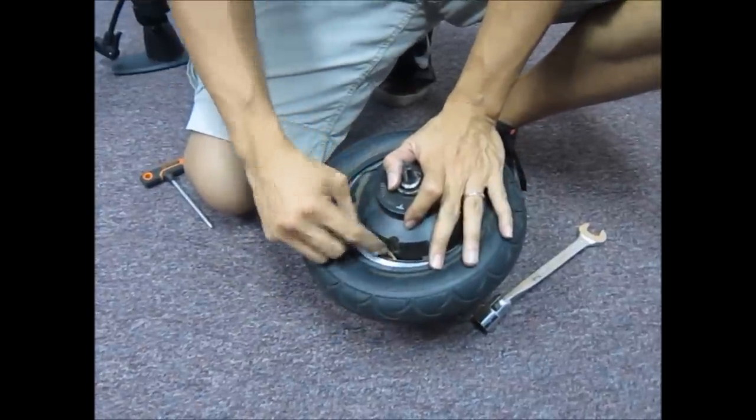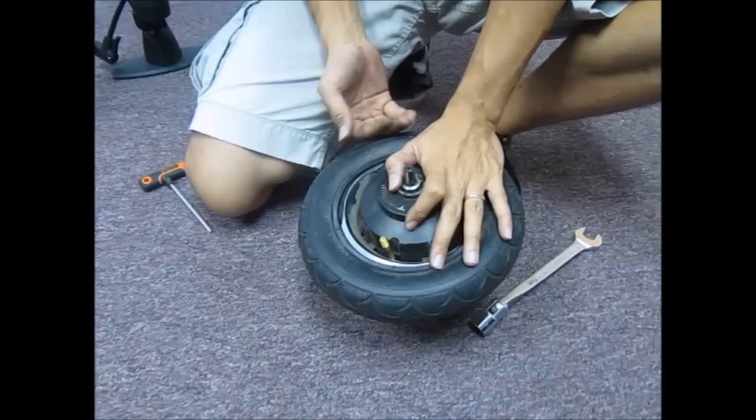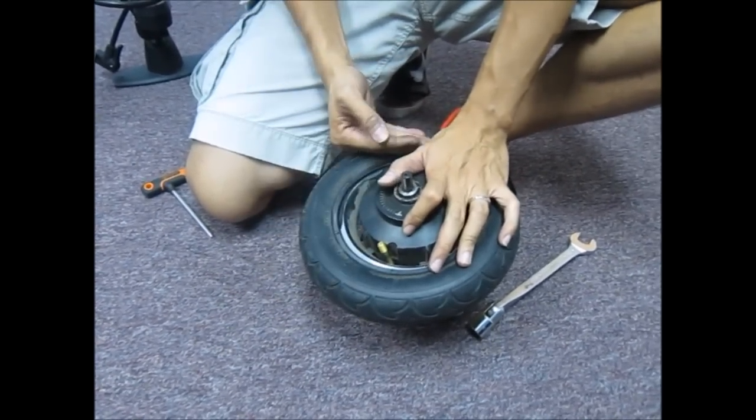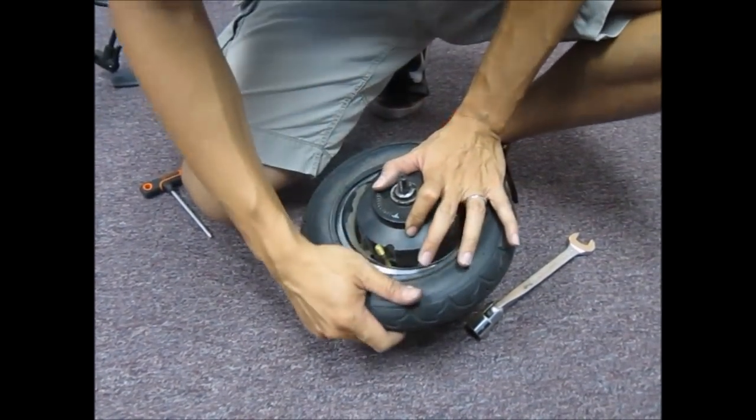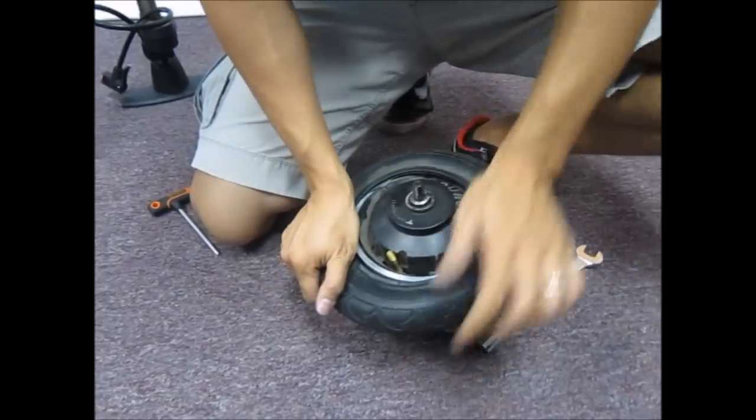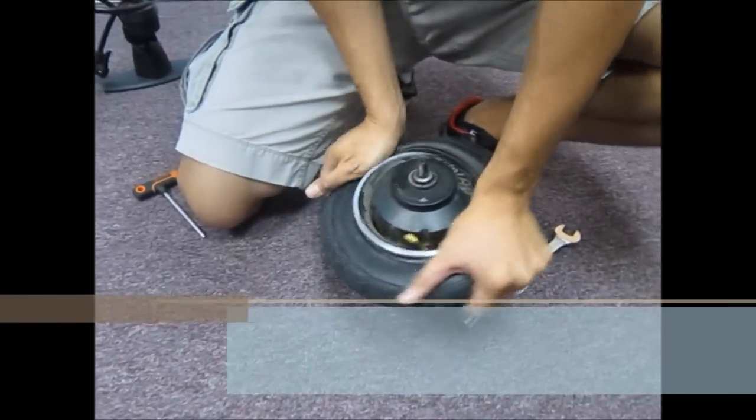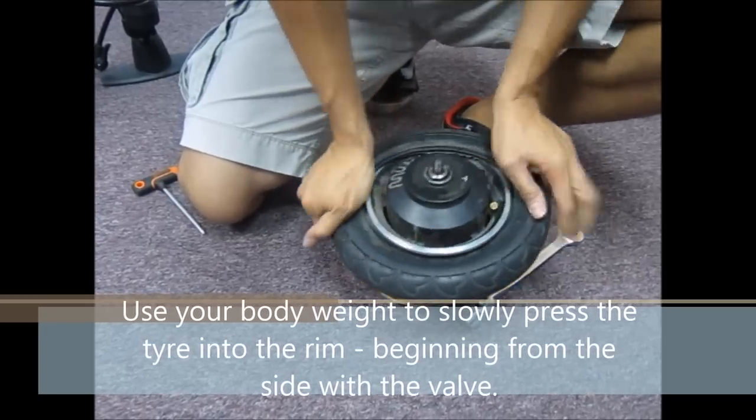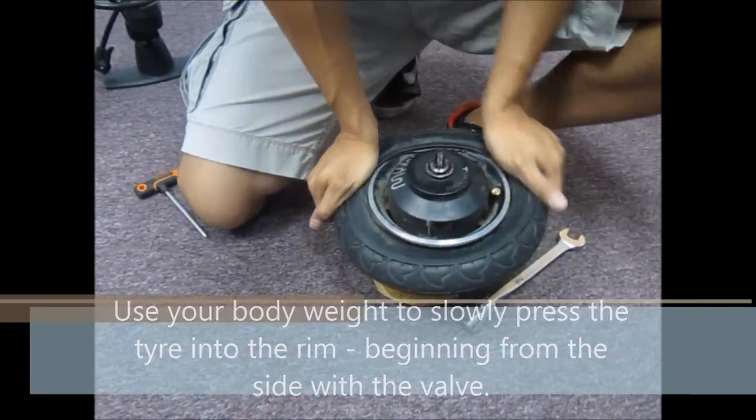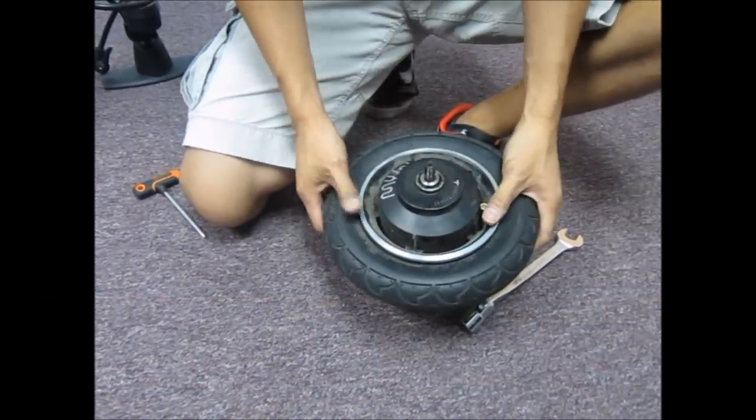Make sure to start from the valve side. When you took the tire out, you started from the side opposite the valve. When you're going to put the tire back in, start from the valve side. Hold one side and slowly tuck it back in. There you go, easy.